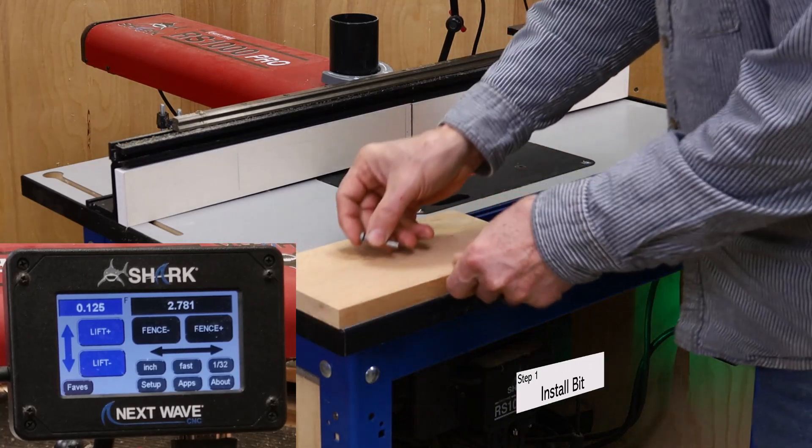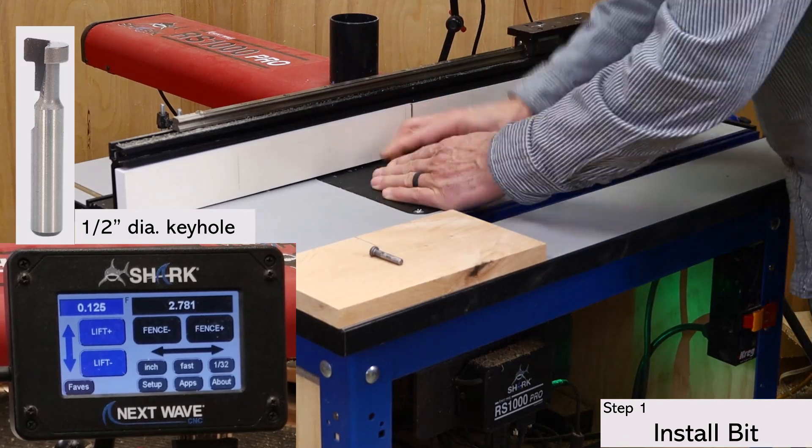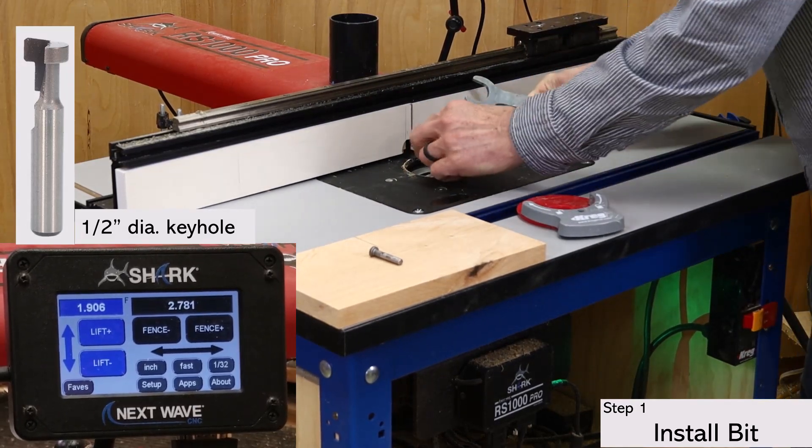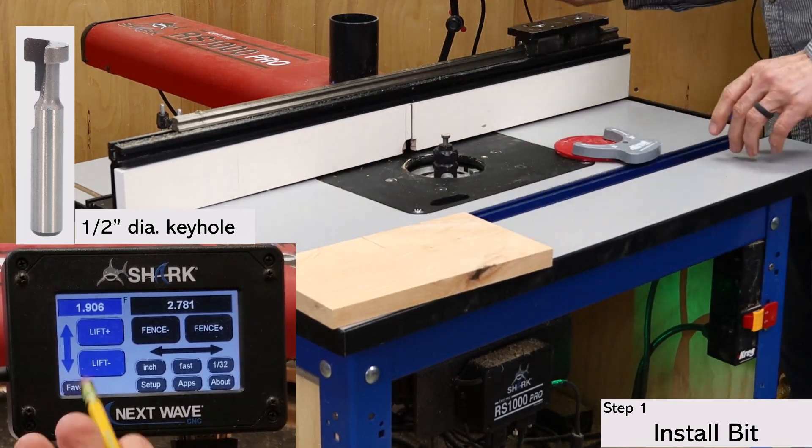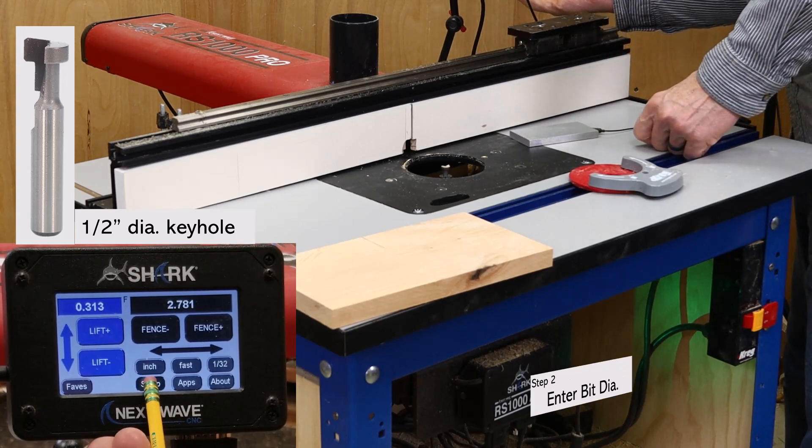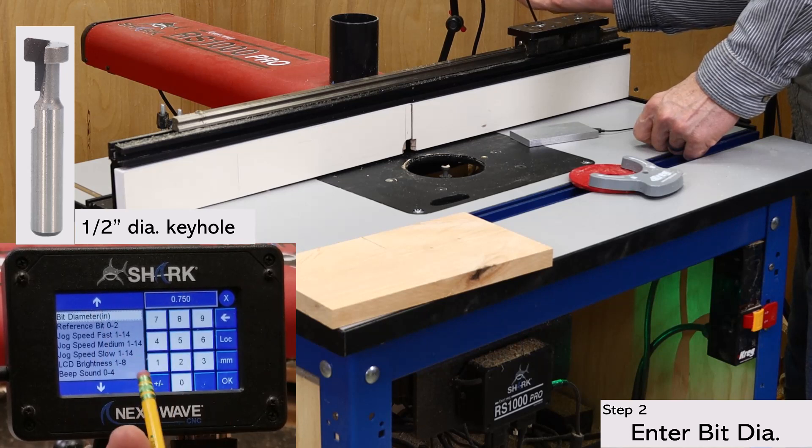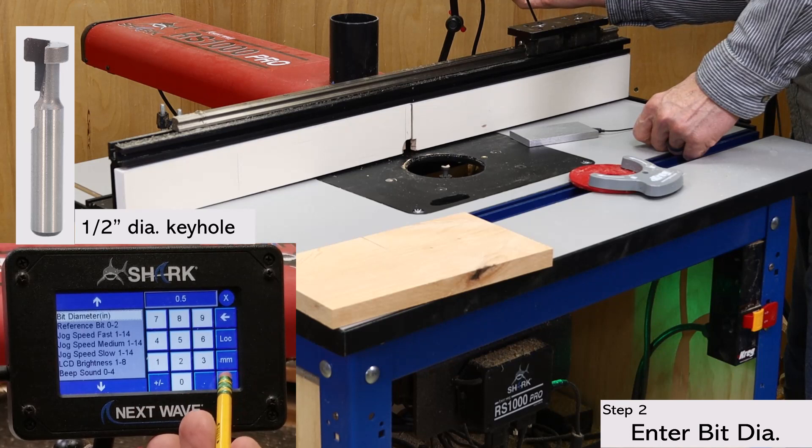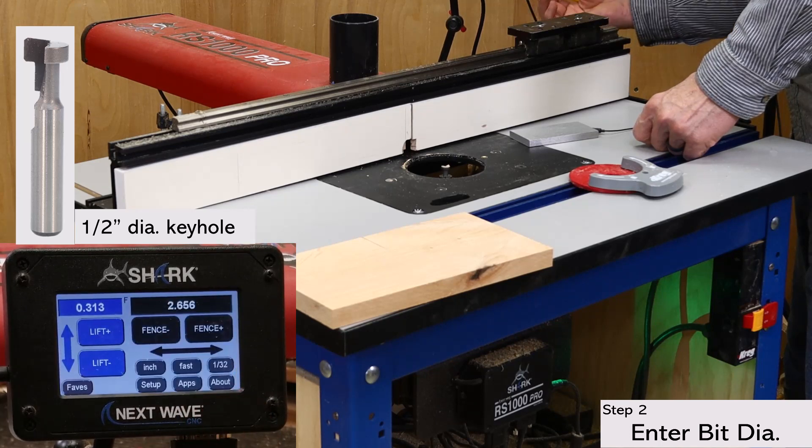The first step is to install the bit. For this setup, I'm using a 1.5-inch diameter keyhole bit, but other size keyhole bits are easily used as well with this app. With the bit installed, open the settings menu and enter the bit diameter. There are a couple of places in the pendant where you can enter the bit diameter, but I prefer to do it here to avoid errors later. Plus, the bit diameter is needed for the fence calibration, which is coming up shortly.